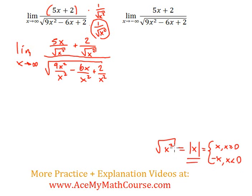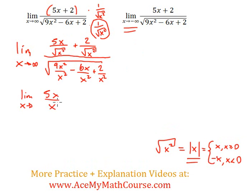So how does this affect us? In this case, x is going to positive infinity, so the square root of x squared is just going to be positive x. Later, when it goes to negative infinity, we'll have to put in a negative x — we'll talk more about that. For now, we're replacing the square root of x squared with just x.